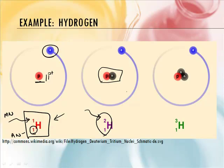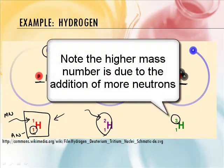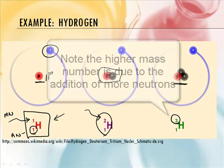So it's still hydrogen — it just has a different mass. And the third kind of hydrogen has two neutrons and one proton, so its mass number is 3. It's still hydrogen because it has one proton, but it has a mass number of 3. The difference is the neutrons.